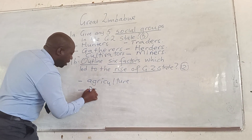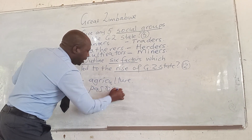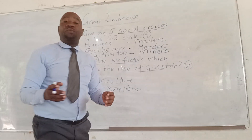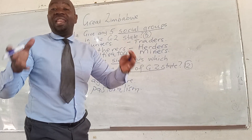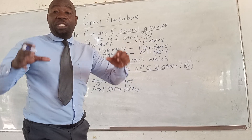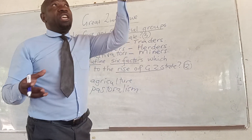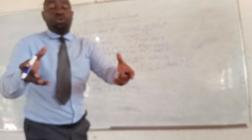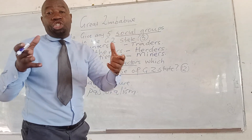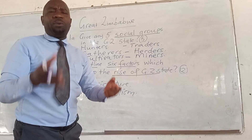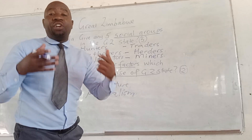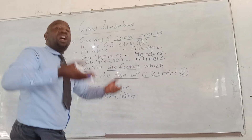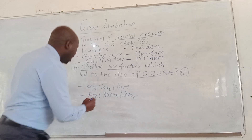We also talk about pastoralism — the keeping of cattle. The area at Great Zimbabwe had good grazing pastures and received adequate rainfall. So it led them to be in a position of having cattle, sheep, and goats. It was because of good grazing pastures that were at Great Zimbabwe, leading to the rise of the state.